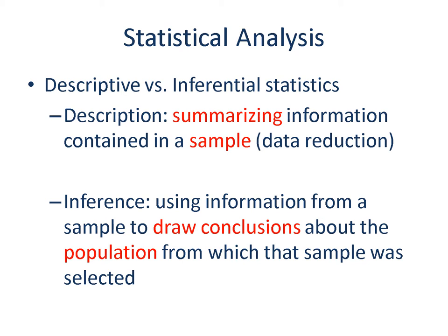As we discussed previously, we get our sample because we cannot observe the entire population. So how do we draw conclusions about the population from our sample? Using some statistical calculation, we test to what extent the information obtained from our sample is a reflection of your population of interest. Depending on what you want to accomplish from your study, you will describe the major attributes of your sample, or analyze your data using inferential statistics to make conclusions about the population.